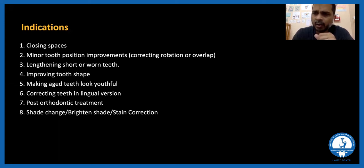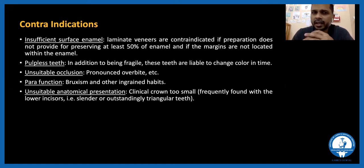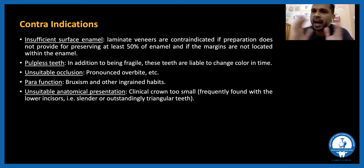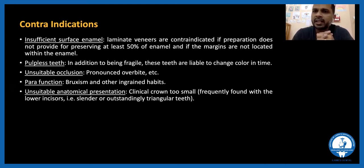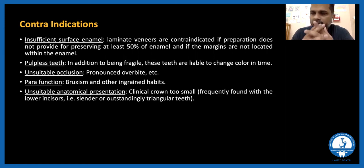There are certain contraindications. One of the main contraindications is cases where there is no sufficient enamel, because veneers — whether ceramic or composite — are bonded to enamel. We need a good bonding surface and adequate enamel. Cases where teeth are highly fractured, have large composite fillings already present, or have a lot of dentine exposure with insufficient enamel are not good cases for doing veneers.